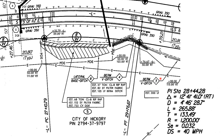Let's dig in a little bit more. The superelevation is 0.032, or 3.2%. It's a 1,200-foot radius curve with a design speed of 40 miles per hour. The length of the curve is 265.88 feet, and we could check that math — it should be the distance from the PC to the PT, so subtracting those two stations should give us 265.88. We're also given the deflection angle of 12 degrees, 41 minutes, 41 seconds, turning to the right as we go in increasing stationing. The PI — point of intersection — is at station 28 plus 44.28.